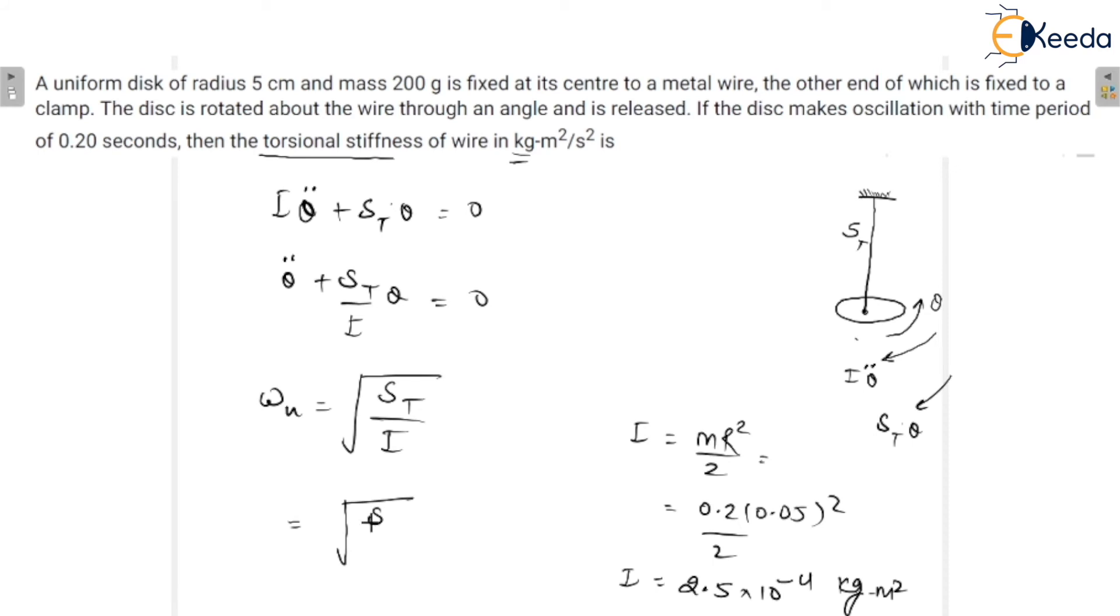Omega_n would be the square root of st upon I. What is st? That is, we have to calculate it. We have to calculate this torsional stiffness. That is st upon 2.5 multiplied by 10 to the power minus 4. Now, what is omega_n?